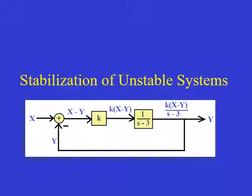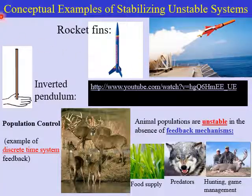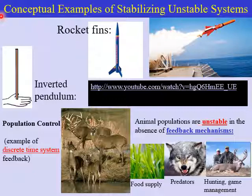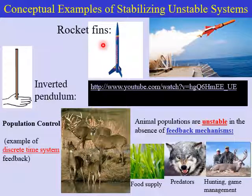In this video lecture, we're going to look at the stabilization of unstable systems. This is another important application of linear feedback systems. Let's take a look at some conceptual examples of what we mean by stabilizing an unstable system. A rocket, a missile, or even an arrow is inherently unstable in that its direction can change due to just small changes in wind.